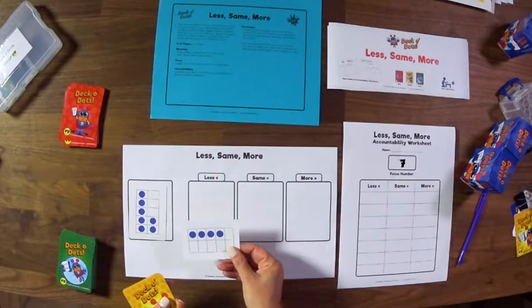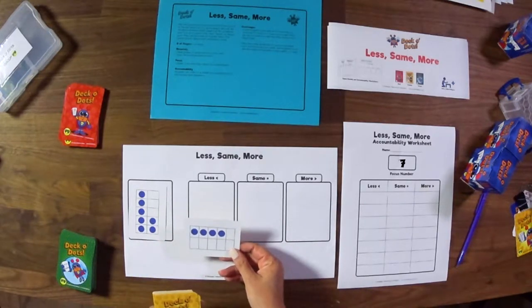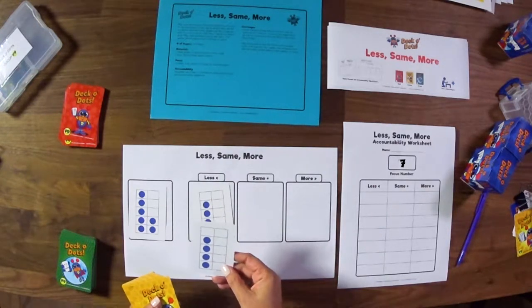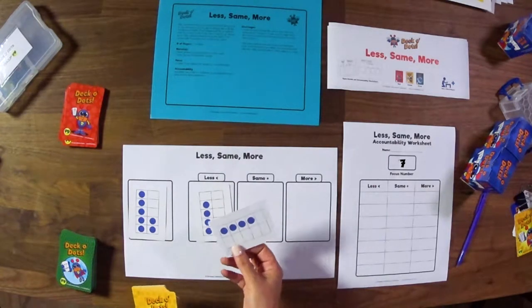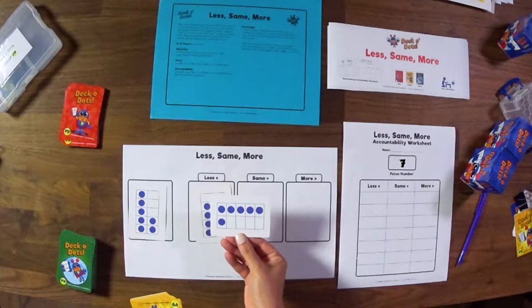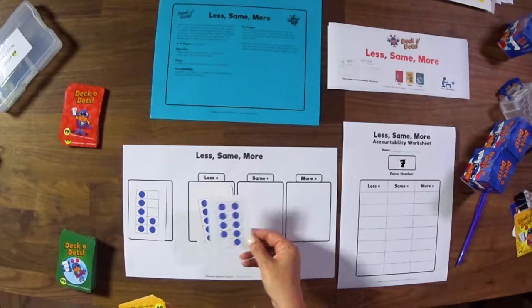We want the kids to be able to subitize, be able to instantly recognize how many they see, and then put it in the correct sorting category. So if I pull out the number 4, I'm going to look at it for our focus number and realize that it is less. In this game, we're not using the wilds because it wouldn't really serve a purpose. I have another 4. It's going to be less than my total. Here I have a 6 and it's also less.